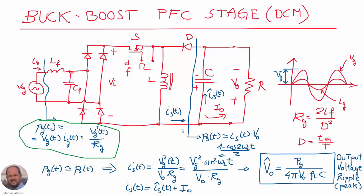The instantaneous power being injected into the RC network can be calculated by multiplying the instantaneous current being injected times the voltage vo. We can assume that the voltage vo is approximately constant, so we get this expression. By equaling these two instantaneous powers we can then obtain this expression for the instantaneous current being injected into the RC network.